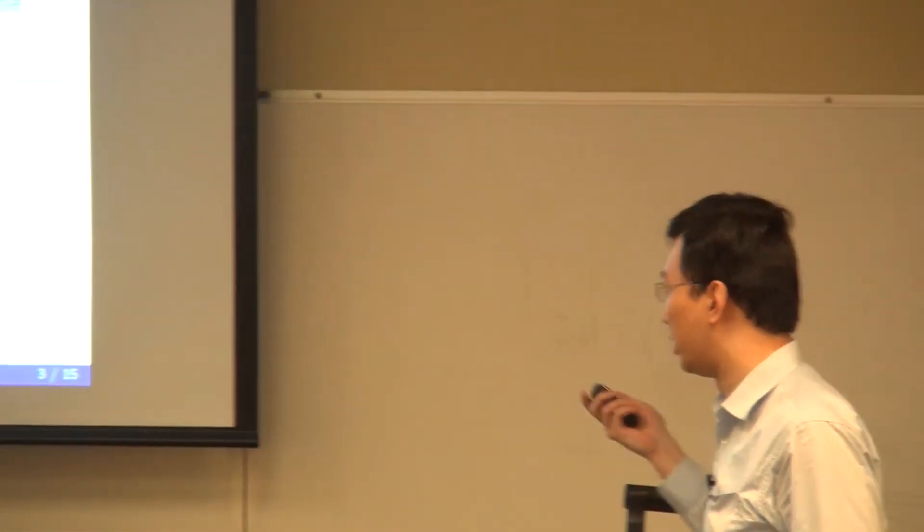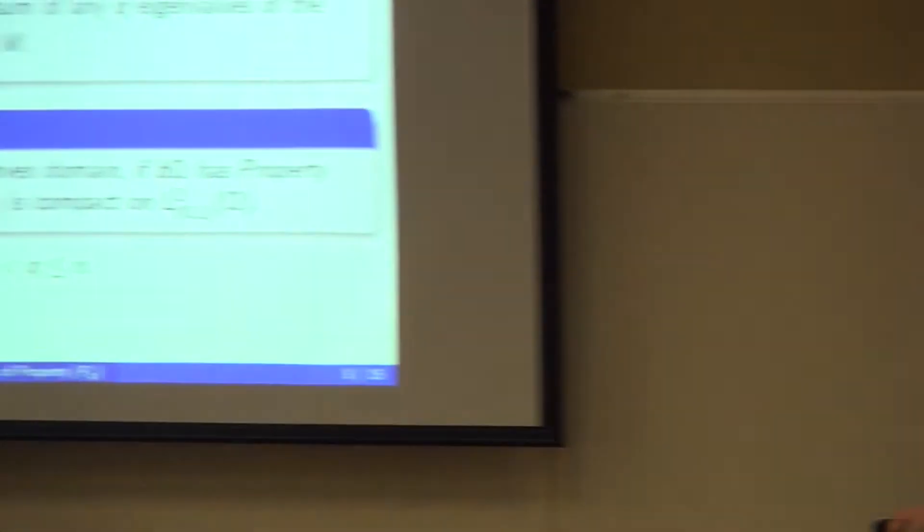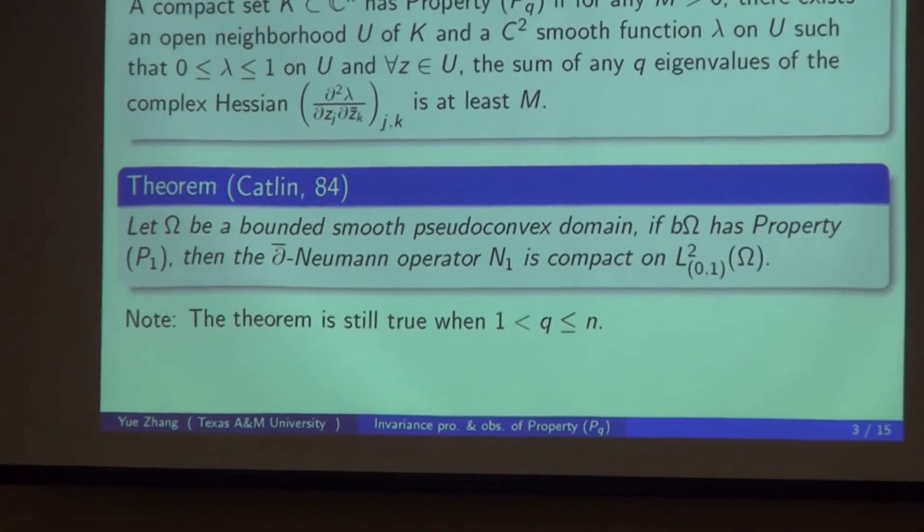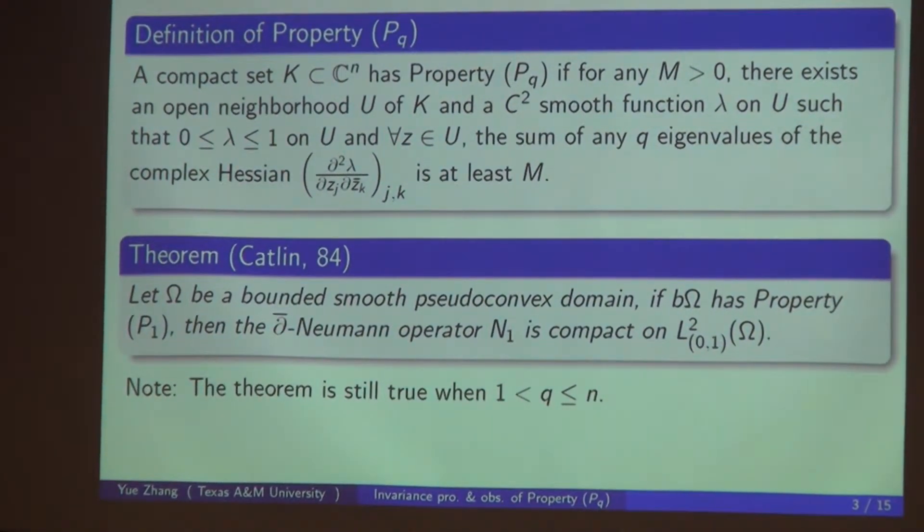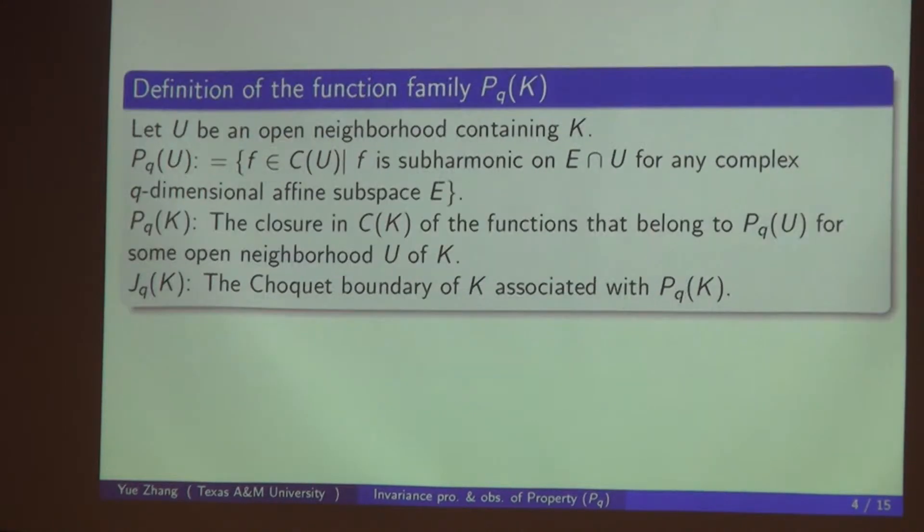If you take q equal to 1, that's just saying the minimum eigenvalue of this function is arbitrarily large, at least M, where M is usually a large number. By Catlin's work in 1984, if omega is a bounded smooth pseudoconvex domain, if the boundary has property P_1, then the d-bar Neumann operator N_1 is compact on L² forms. The theorem is still true for higher level forms.